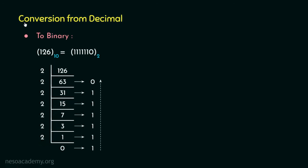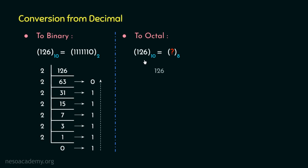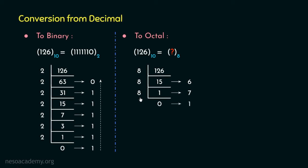Let's now observe the conventional approach of conversion from decimal to octal. We are going to find out the equivalent octal value of the same decimal number 126. Since the base of the intended number system is 8, we will perform the integer factorization with 8. 126 divided by 8 produces the quotient 15 with remainder 6. Then 15 divided by 8 produces the quotient 1 and remainder 7. Finally, 1 divided by 8 gives quotient 0 with remainder 1. Recording the remainders in reverse, the equivalent octal value of 126 is 176.